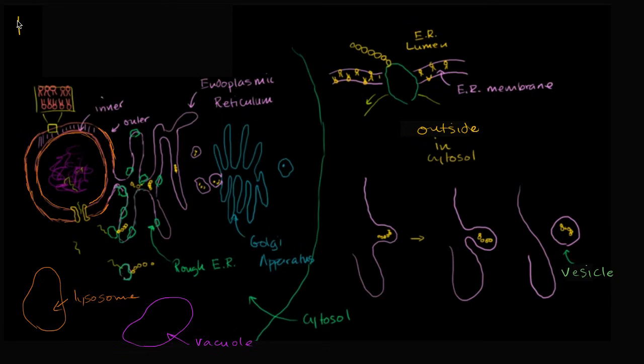What I want to do in this video is give an overview of the endomembrane system in eukaryotic cells. At a very high level, the endomembrane system is all of the membranes that interact with each other inside of a cell.